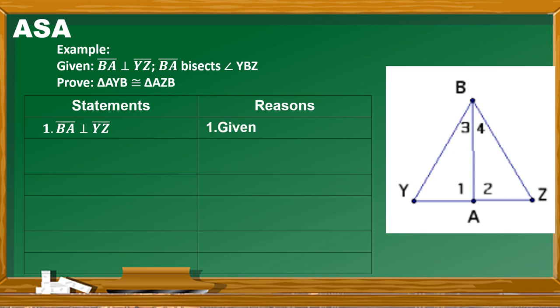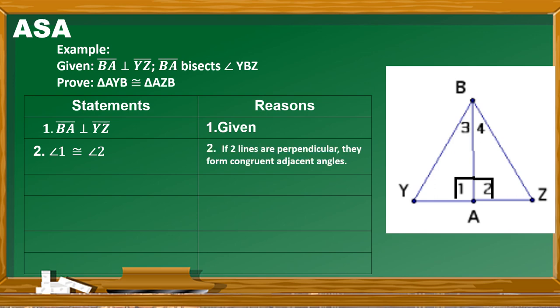Looking at the illustration, since segment BA is perpendicular to segment YZ, right angles are formed — angle 1 and angle 2. So for the second statement, angle 1 is congruent to angle 2, and the reason is: if two lines are perpendicular, they form congruent adjacent angles. For the third statement, we use the second given: segment BA bisects angle YBZ, with reason given.